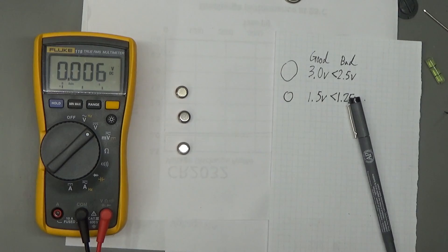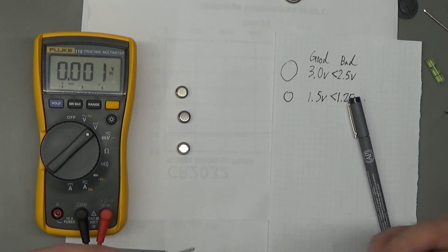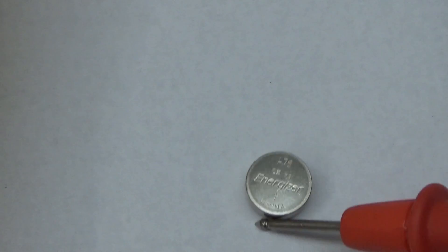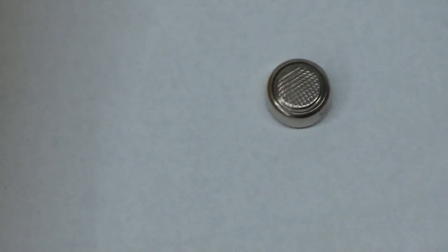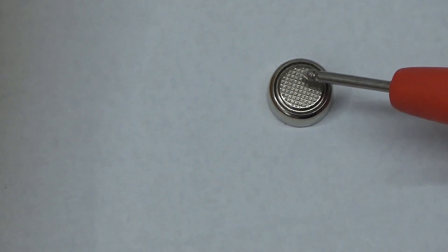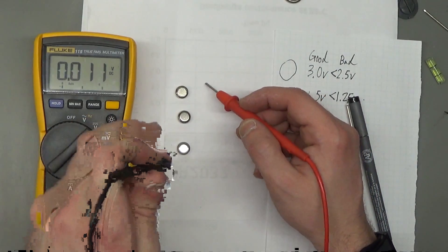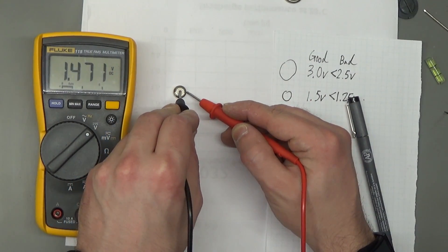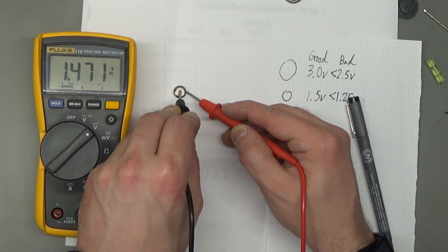Same technique as I just did on the coin cells, just a little smaller. So in order to test these batteries, you will want to flip them over so that the negative is face up and the positive is face down. Black lead in the center of the cell, red lead on the side. That one's just below 1.5 volts, so that one's okay.